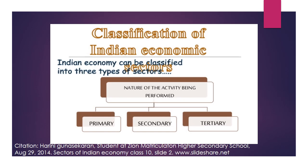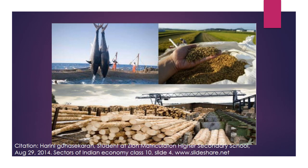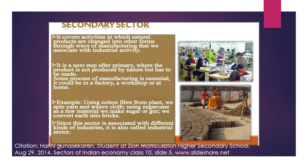Our economy is divided into three main activities: primary, secondary, and tertiary. The first is the primary sector. All activities done using natural resources are known as the primary sector. It is called primary because everything produced in this sector is taken directly from nature — such as agriculture, forestry, mining, and fishing. These are the examples of the primary sector.